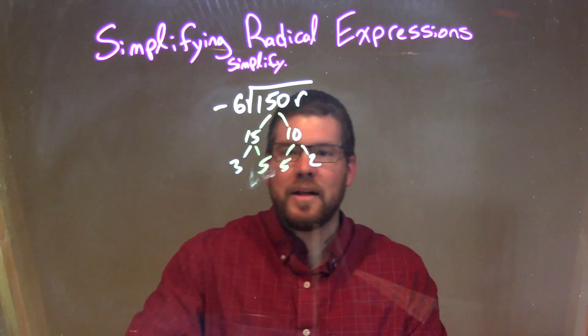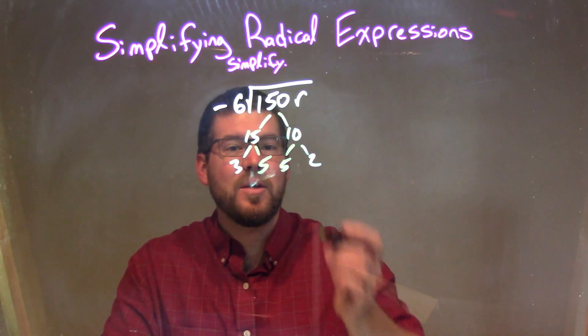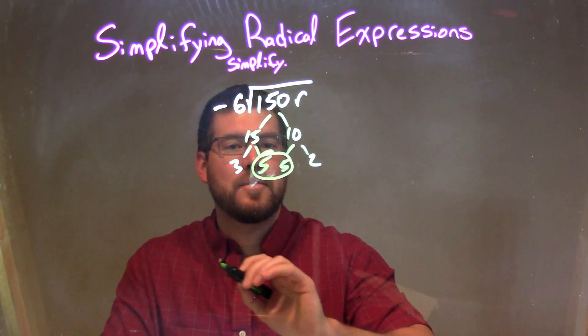And R is just by itself. So now we have to find our pairs. The only pair I see is a pair of 5s.